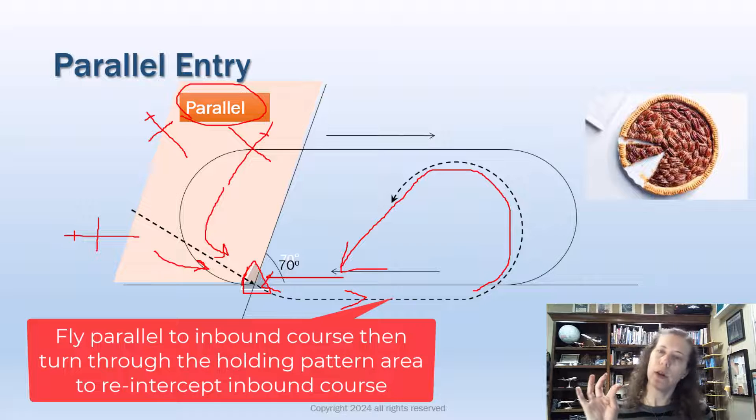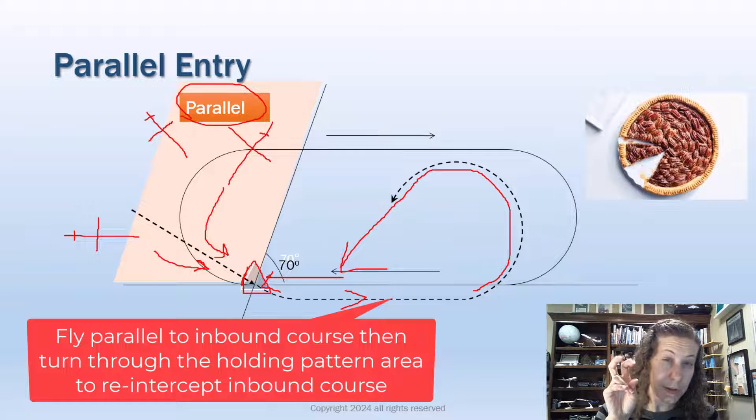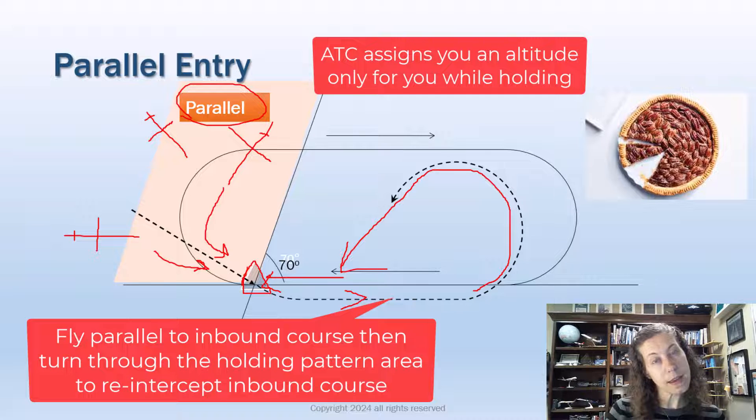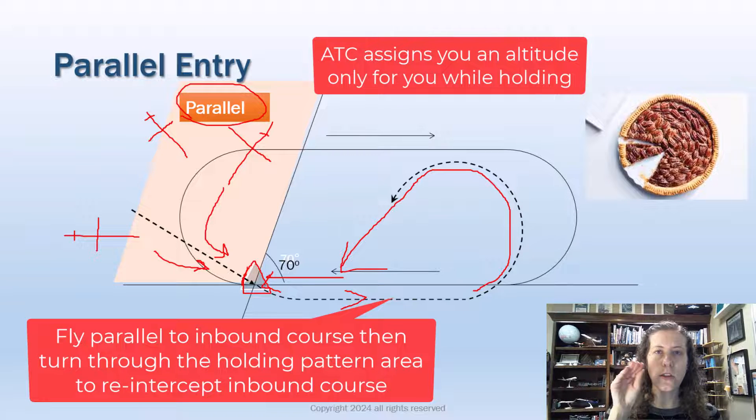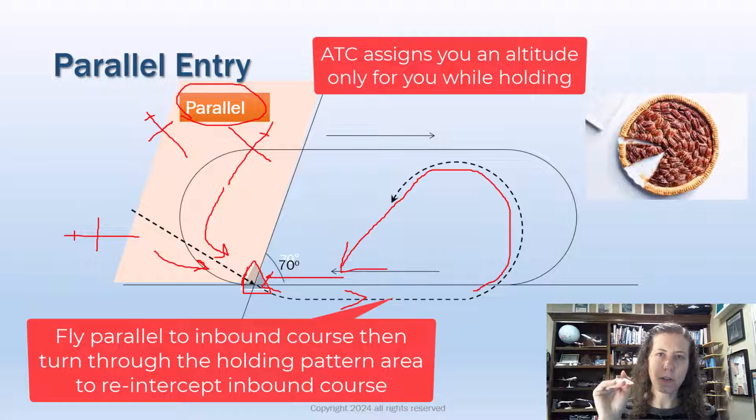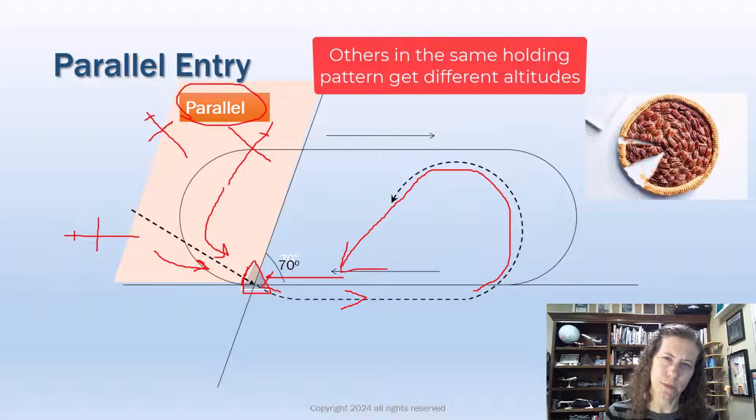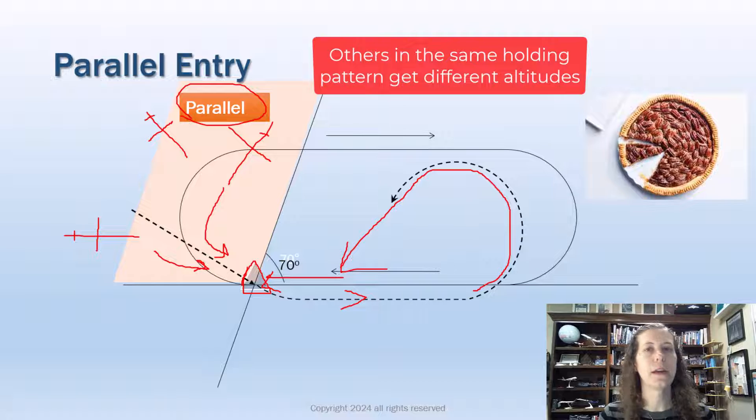Now don't worry about flying what I called opposite the traffic flow, because in a holding pattern ATC is going to give you separation and they're going to assign you holding at your altitude. If anyone else is in the holding pattern, they would be at a different altitude, not at your same altitude. So that's not a concern for us. That is how we do a parallel entry.